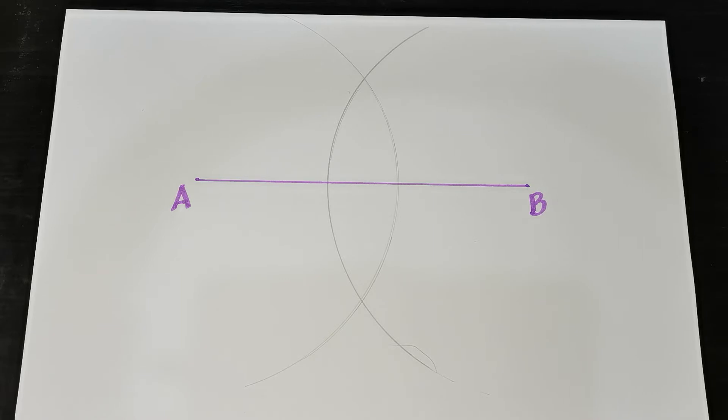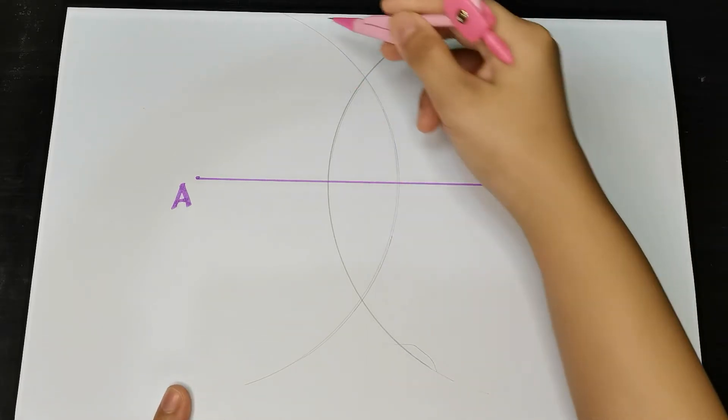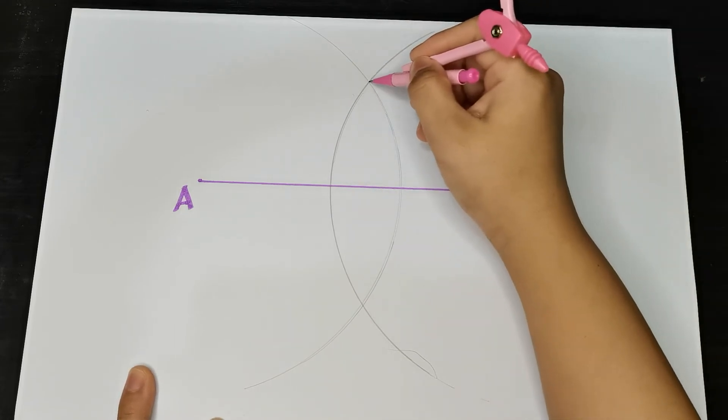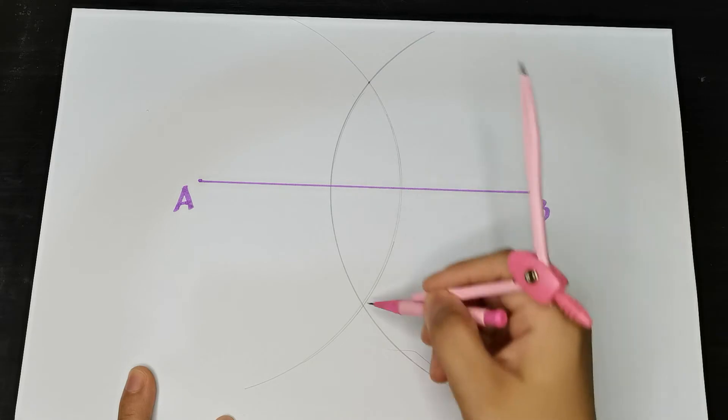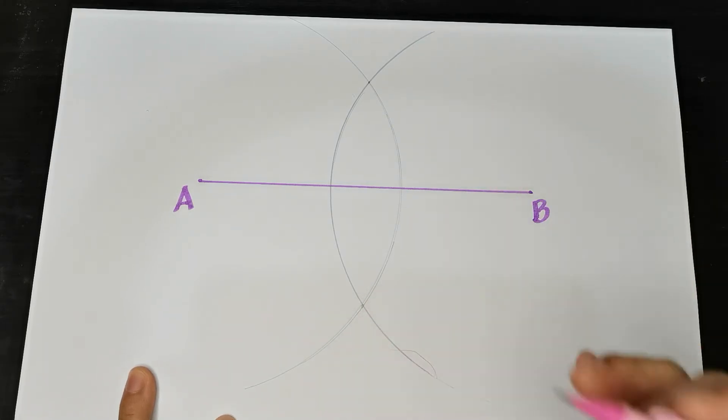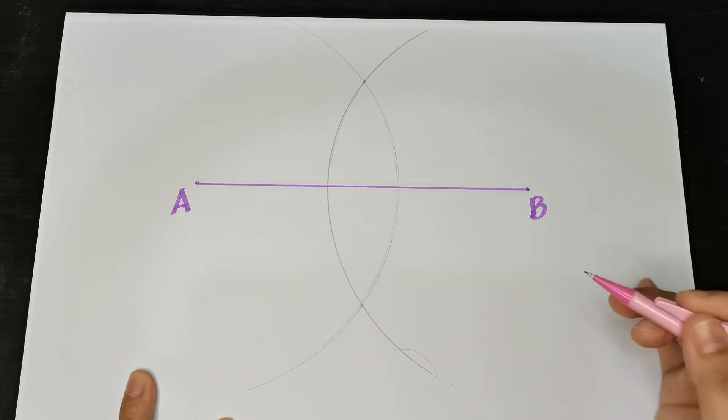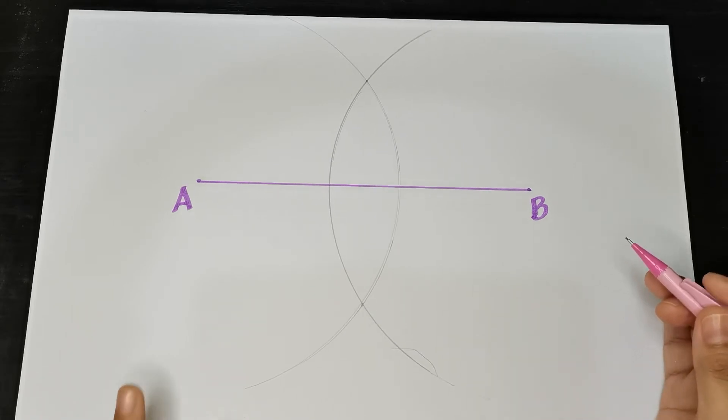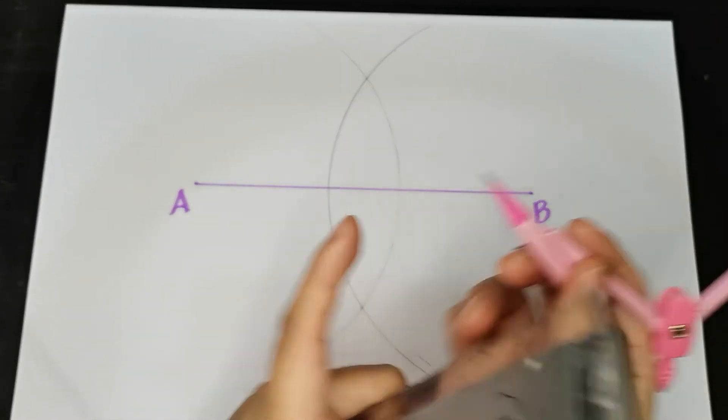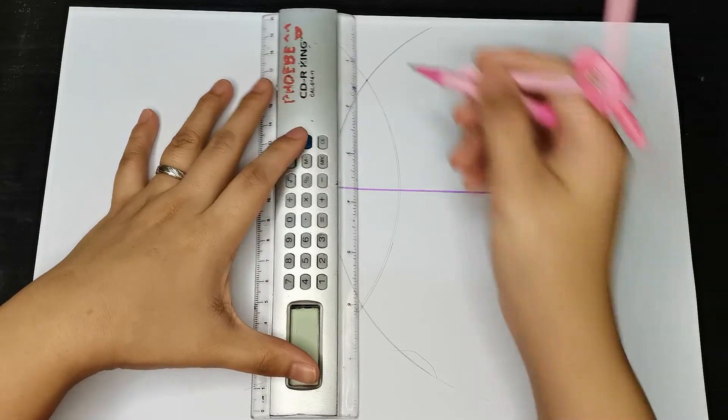After that, go back to the straight edge. Connect the intersection of the two arcs. The first arc and the second arc have an intersection here and another intersection here. You can use the pencil from your compass and your straight edge.